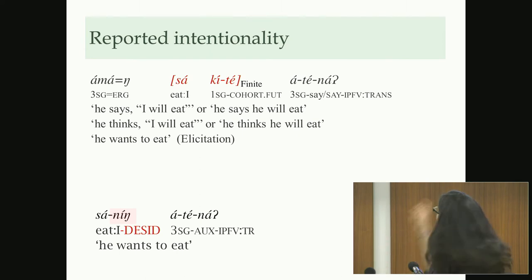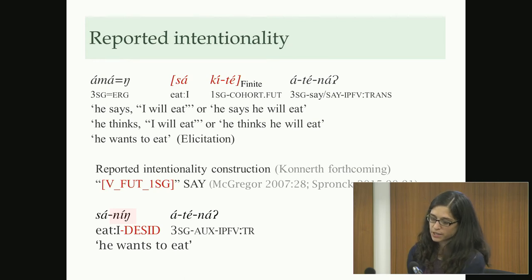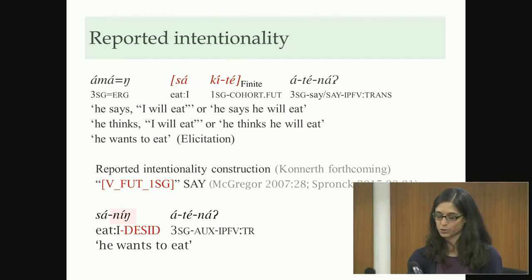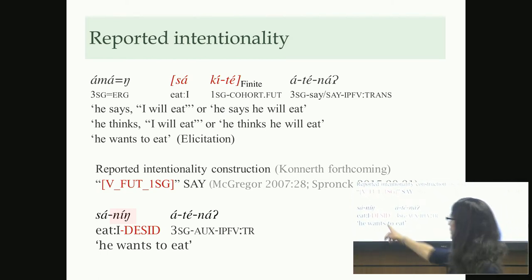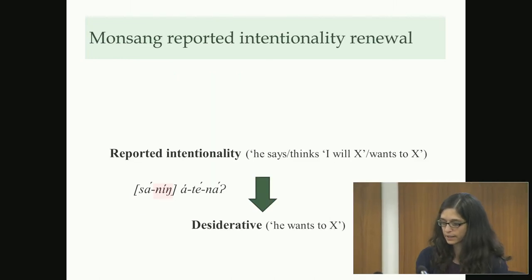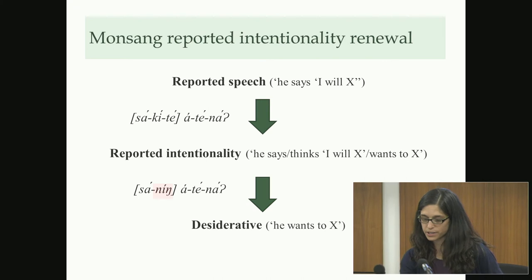In the synchronic reported intentionality construction we have 'sakite', a type of first person singular future form. 'Sanning' started out as a reported intentionality construction but grammaticalized to specifically mark desiderative only. It was the ambiguous construction type, but now narrowed to expressing only desiderative — 'he wants to eat'. Cross-linguistically, reported intentionality constructions always have the same form: reported speech where what is reported is a first person singular future form.